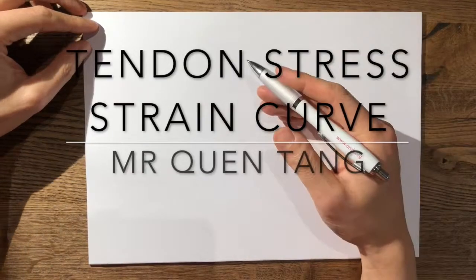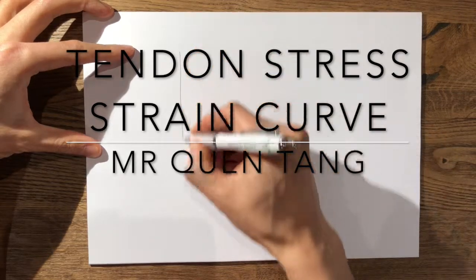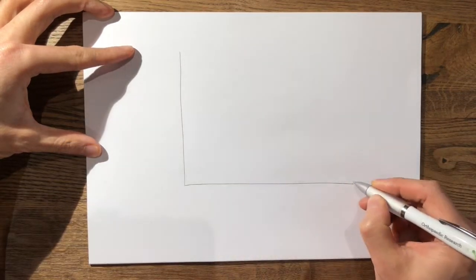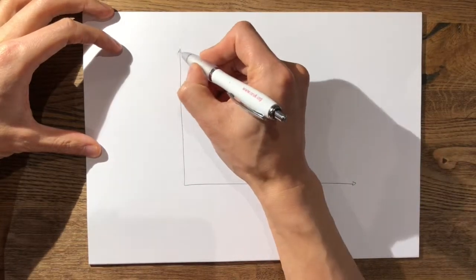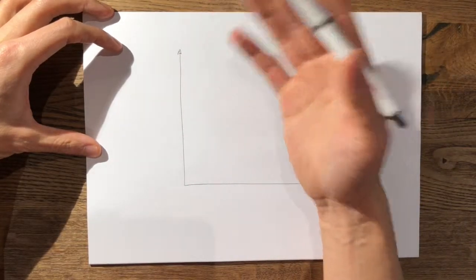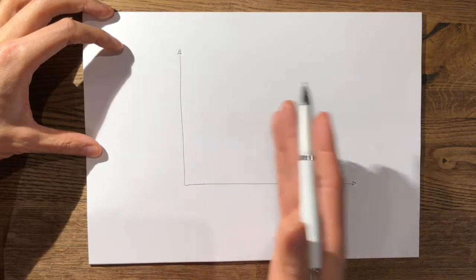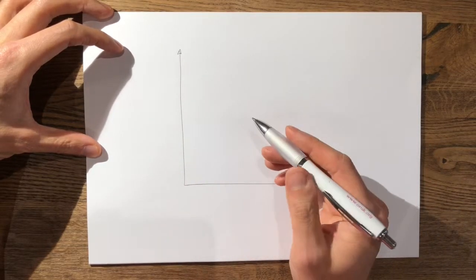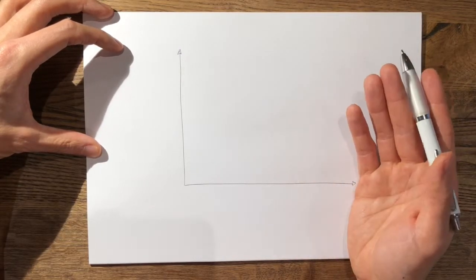In this video I'm going to explain how to draw the stress strain curve of a tendon under a gradual tensile load. This is important because it does have three distinct areas of the curve which is different to the usual stress strain curve that we normally draw for orthopaedic materials.